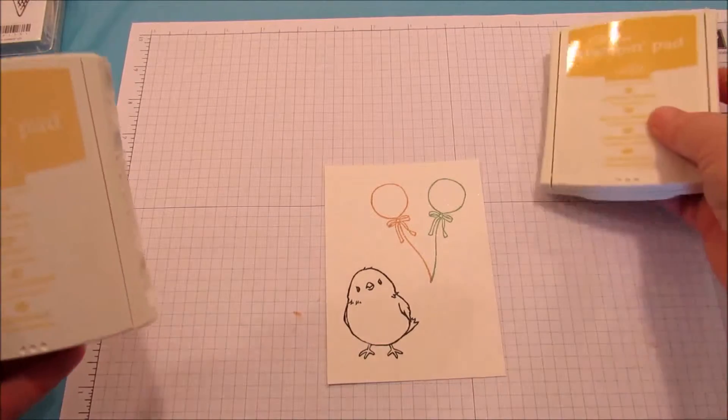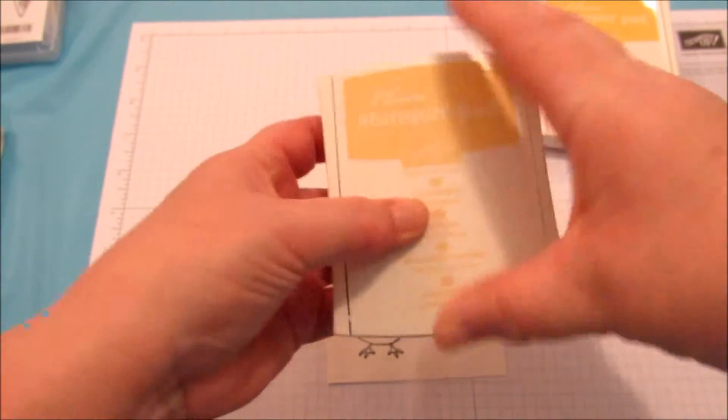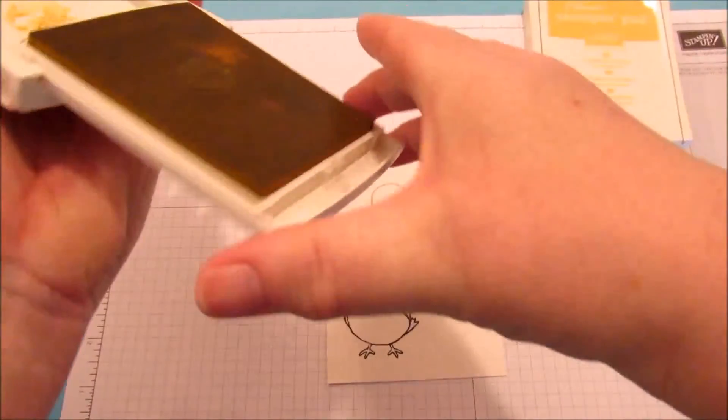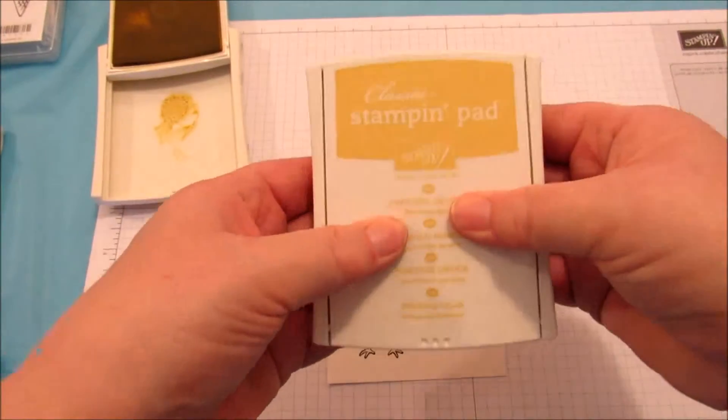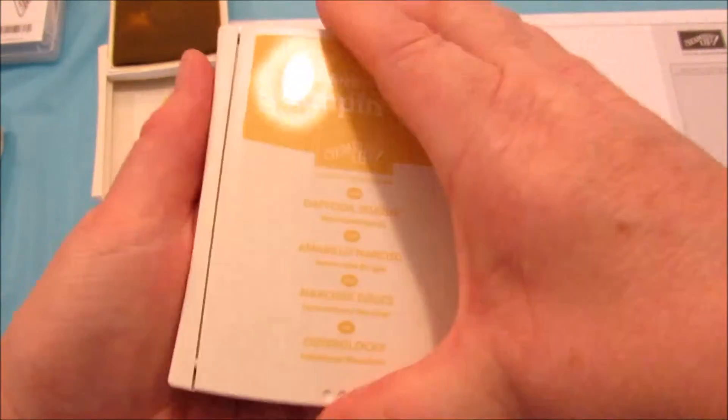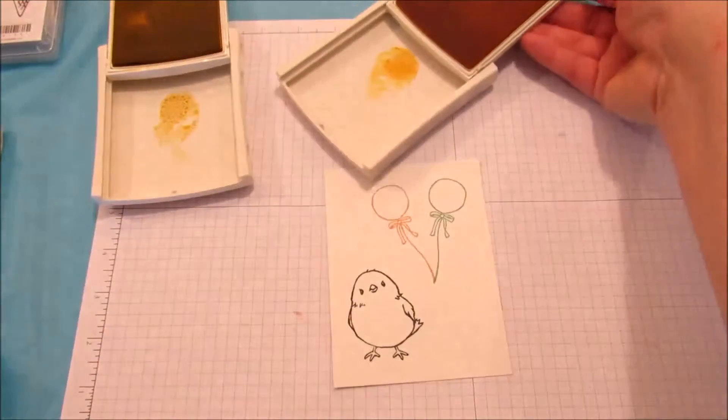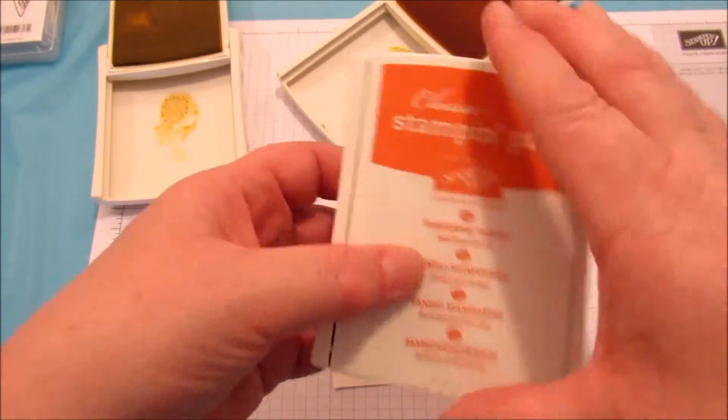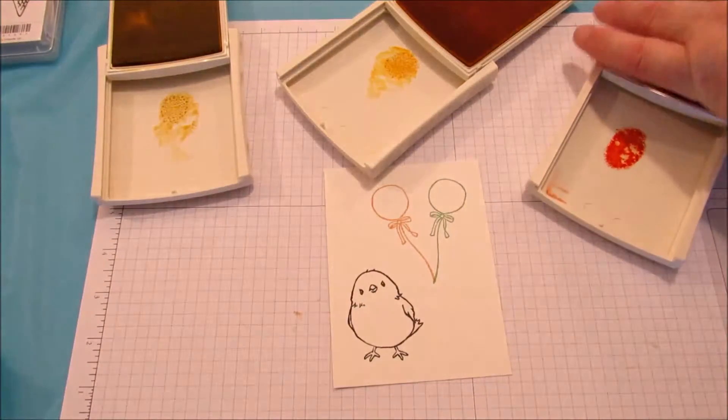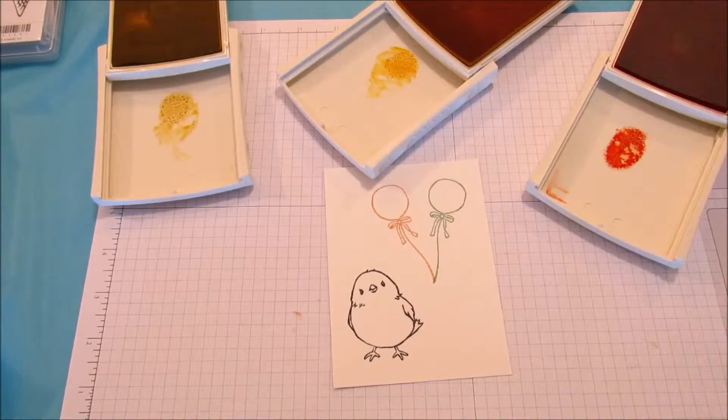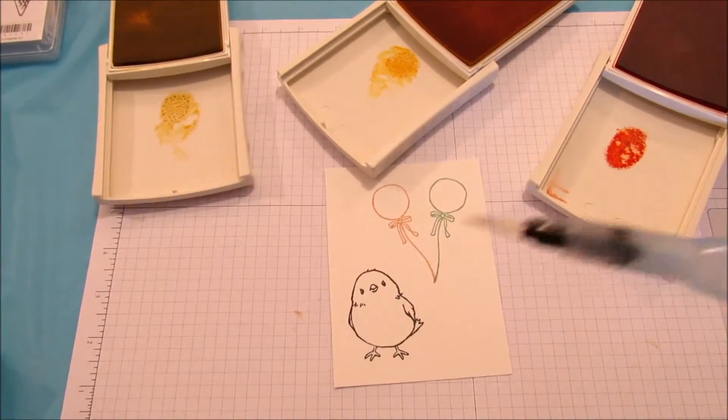Now we're going to be using three ink pads. So saffron. This is so saffron, we're going to press it and do this. We're going to do the same thing with Daffodil Delight. Can you read that? Daffodil Delight. And we'll do that like that. And then we're going to do our Tangerine Tango. Our Aqua Painter. Larger brush and a smaller. This is the larger brush. So we're going to be using today.